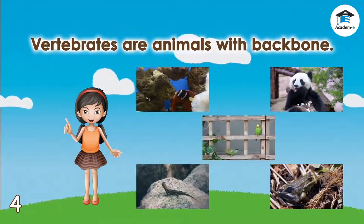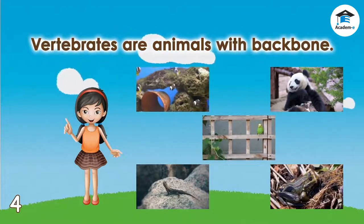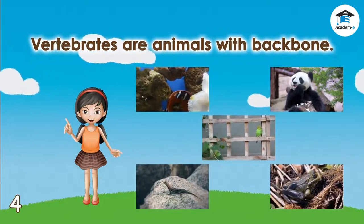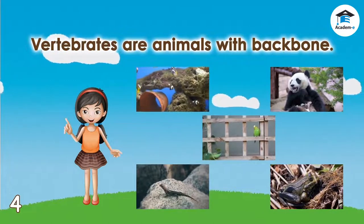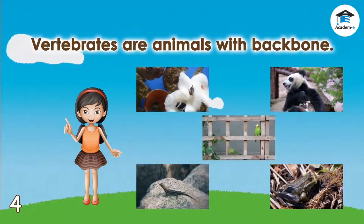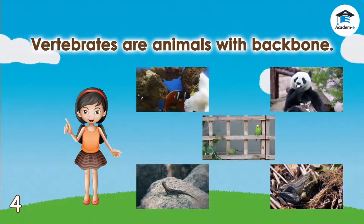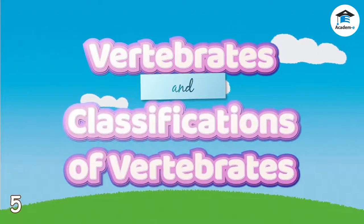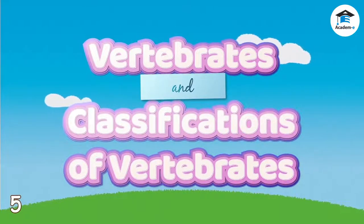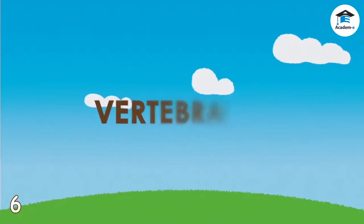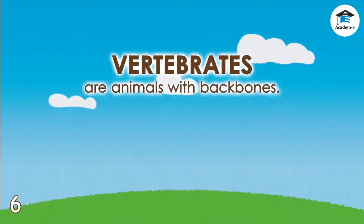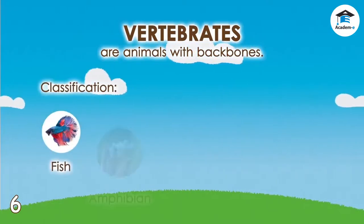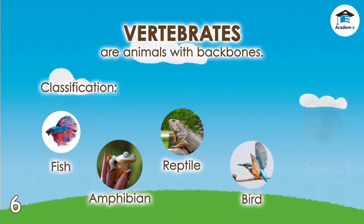Vertebrates also have brains and a central nervous system. Their backbones allow them to move in distinct ways. Vertebrates are animals with backbones, divided into different groups such as fish, amphibian, reptile, bird, and mammal.